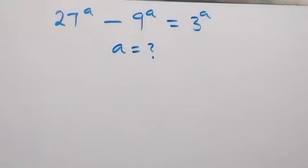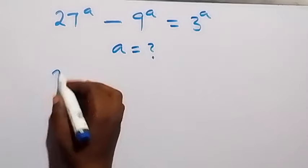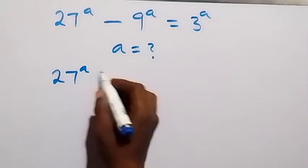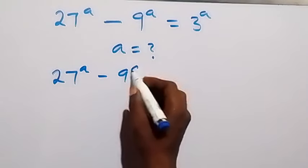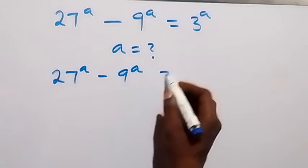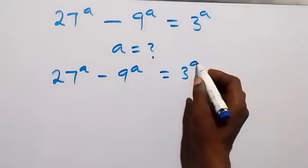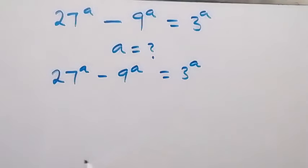Hello, you are welcome. How to solve for a in this nice exponent problem. We have 27 raised to power a minus 9 raised to power a equals to 3 raised to power a.